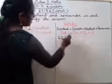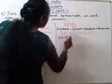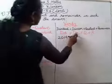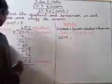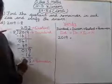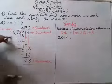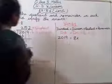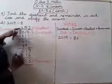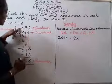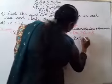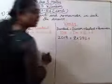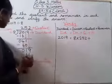Yeh answer humhein aana chahiye. Yeh karne ke baad yeh answer aana chahiye. And DR is divisor. Where is divisor? Divisor is eight. Multiply it by quotient. What is quotient? Two hundred and fifty two. Plus reminder. Reminder is three.